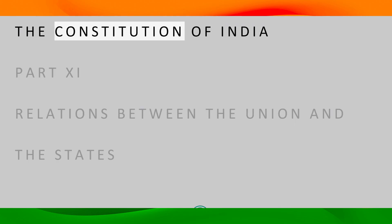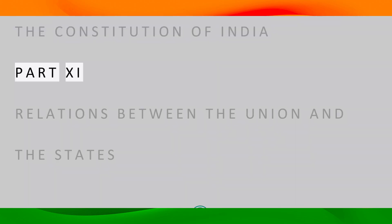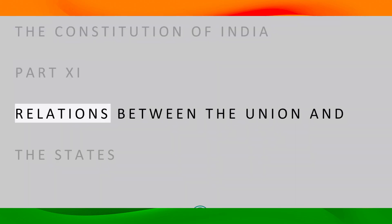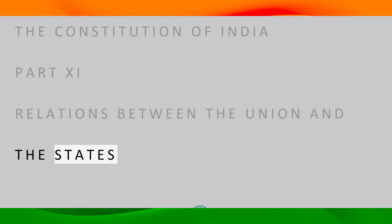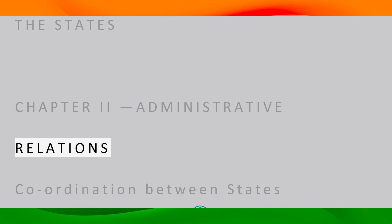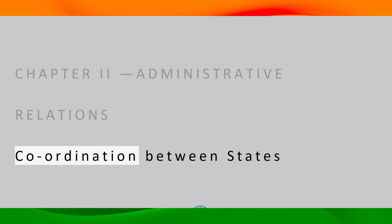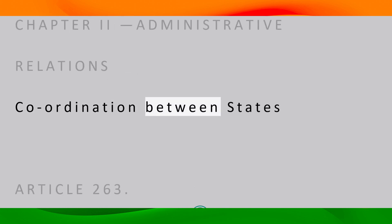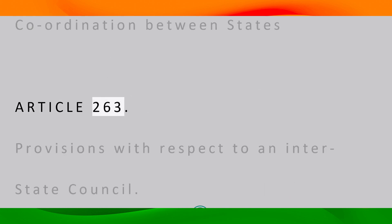The Constitution of India, Part 11 — Relations between the Union and the States, Chapter 2 — Administrative Relations, Coordination between States, Article 263.